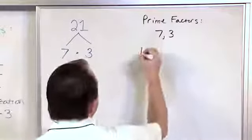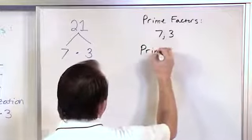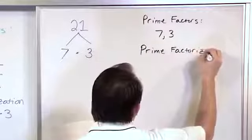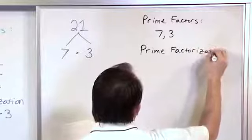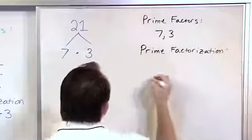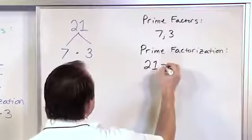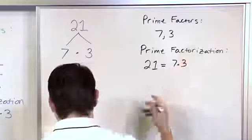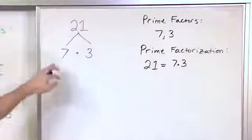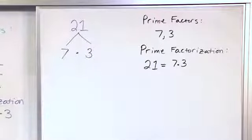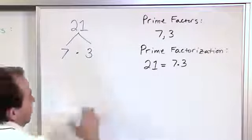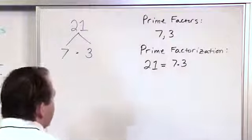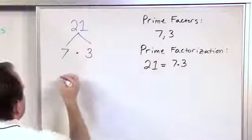If you wanted to write the prime factorization of 21, you would say 21 is equal to 7 times 3, or 3 times 7 — however you want to write it. Basically whatever's at the bottom of the tree. This looks simple because we know 7 times 3 is 21, but both are prime numbers and that's why it works out that way.